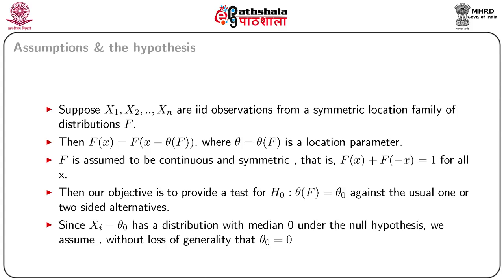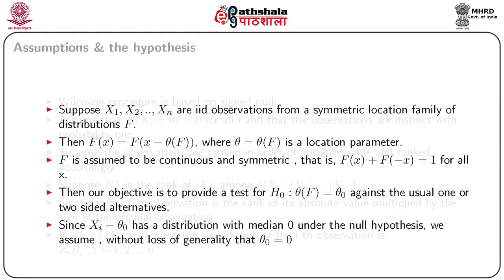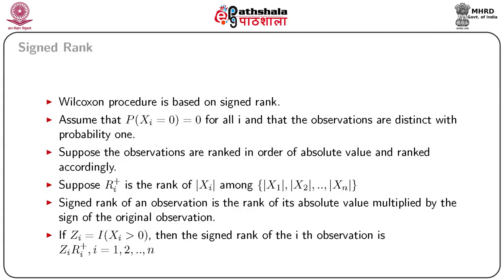Since under H0, xi minus theta-naught has a distribution with median at 0, we can without any loss of generality assume theta-naught as 0. We further assume that the probability that xi equals 0 is 0 for all i, and that the observations are distinct with probability 1.